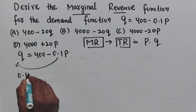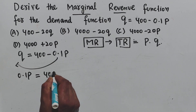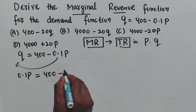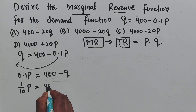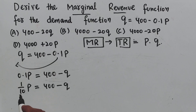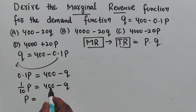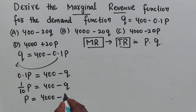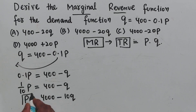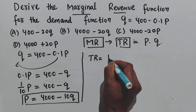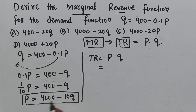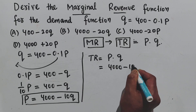We need to solve the demand function for P. Transposing terms, we get 0.1P = 400 - Q. Since 0.1 = 1/10, multiplying both sides by 10 gives us the inverse demand function: P = 4000 - 10Q.